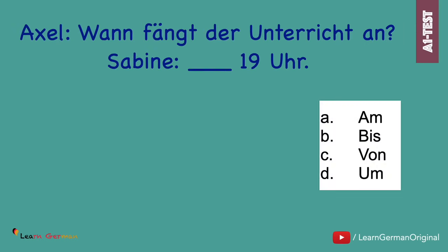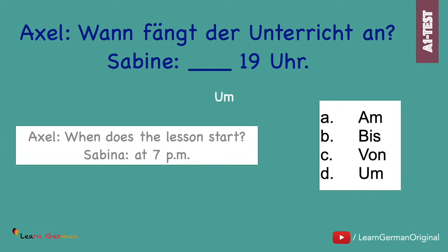The next one. Axel: Wann fängt der Unterricht an? Sabine: Neunzehn Uhr. You have to fill in the blank with the correct preposition. When talking about time, or Uhrzeit, you use the preposition um. Um neunzehn Uhr.